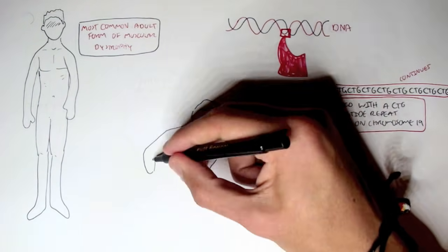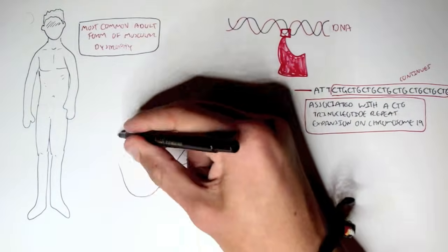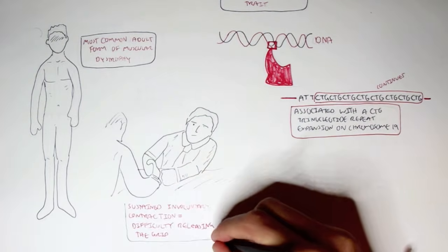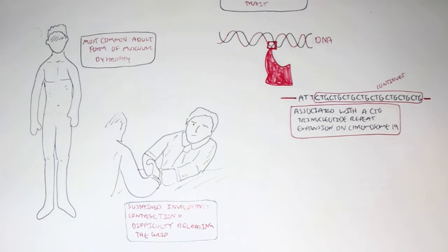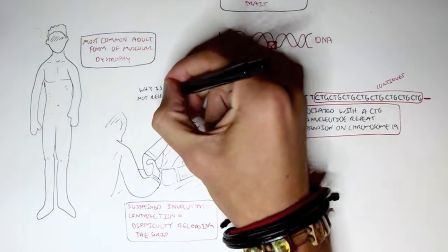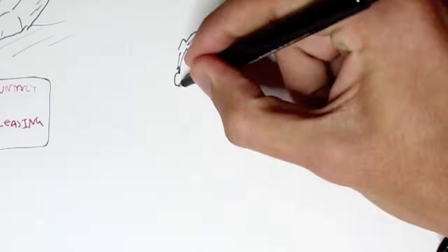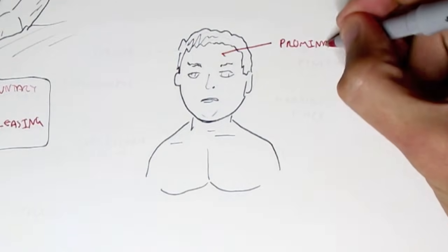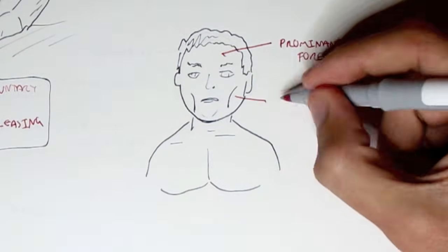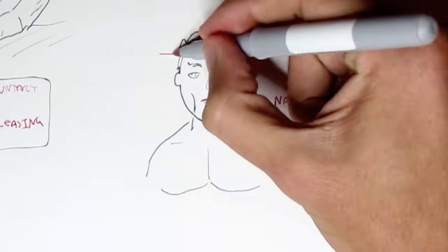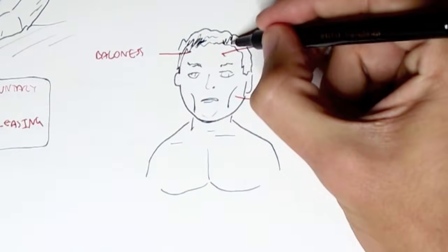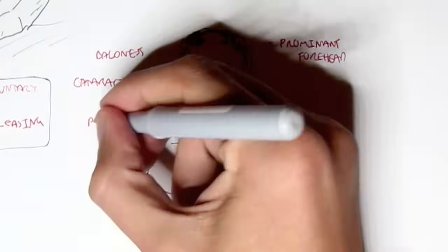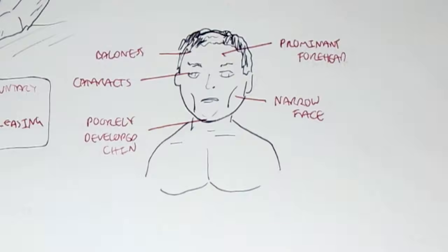Myotonic muscular dystrophy, essentially you have the symptom of sustained involuntary contraction. So for example, if you shake someone's hand, there's difficulty in releasing the grip. This is because the muscle in your hands are still contracting, and so it takes a while for this contraction to disappear. Other associated symptoms with myotonic dystrophy. The sufferer may have a prominent forehead, a narrow face, baldness, cataract formation in the eyes, and a poorly developed chin.